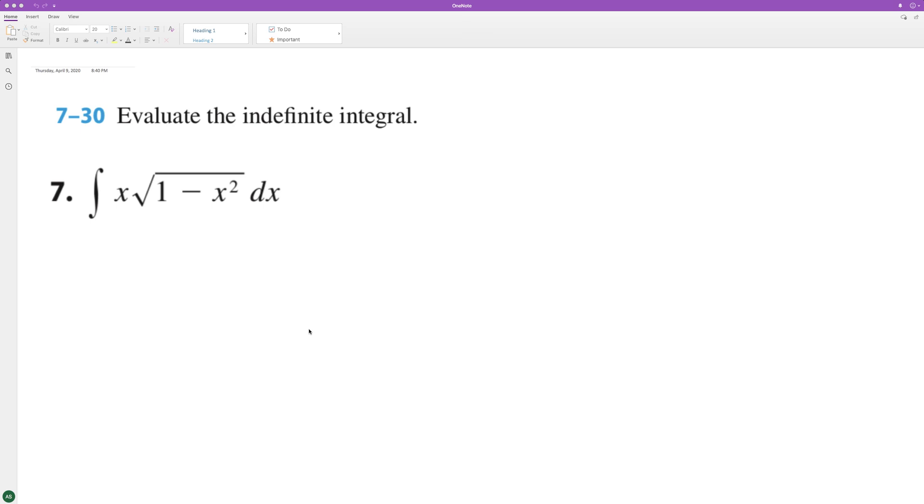To integrate the following indefinite integral, we'll use u-substitution. What we'll do here is set u equal to 1 minus x squared, and du in this instance is going to be equal to the derivative of this, which is negative 2x.